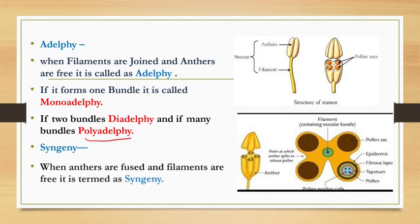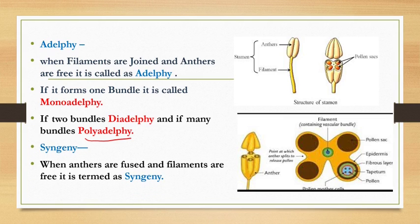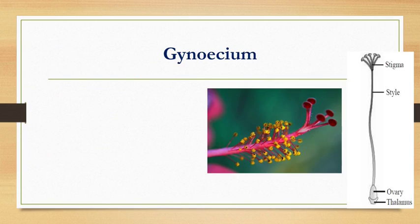Syngenesious condition is when anthers are fused and filaments are free — it is found in sunflower. We are going to see the monoadelphous condition in hibiscus flower.